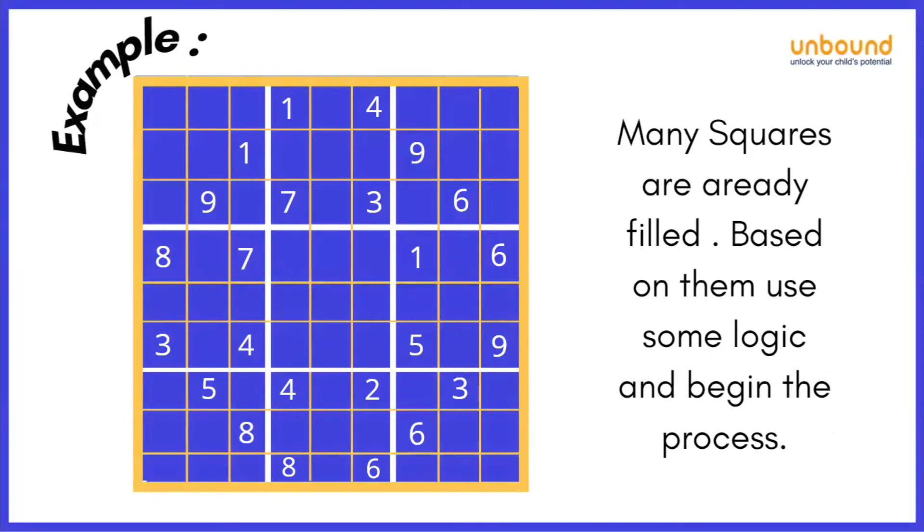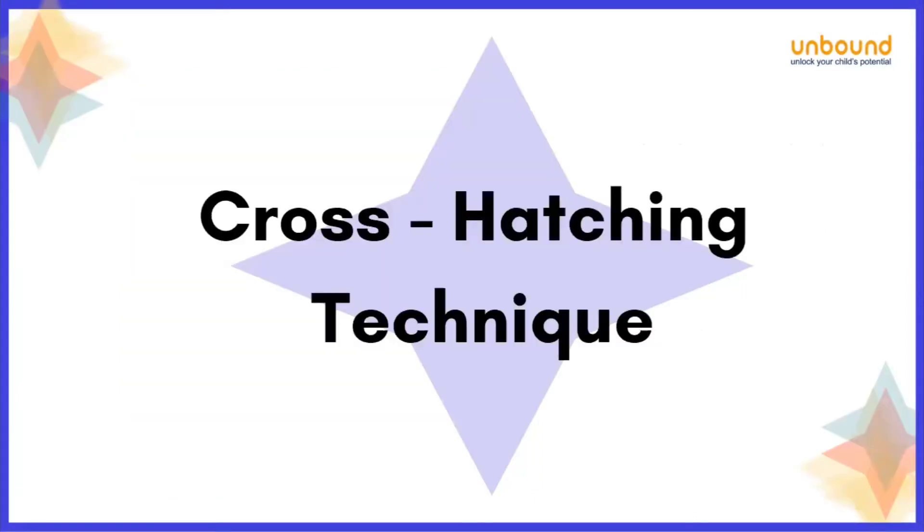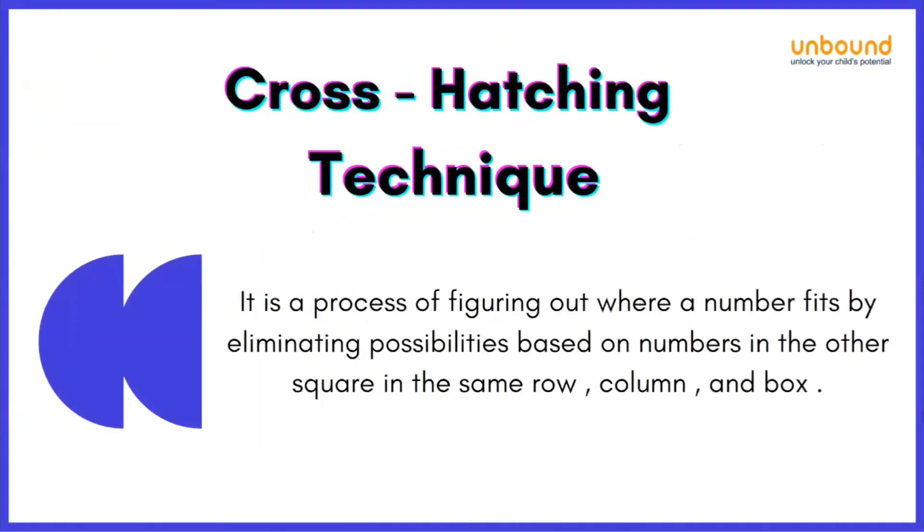According to people's convenience, they use different types of logic. And one of them is the cross-hatching technique. Basically, what happens in a cross-hatching technique? It is a process of figuring out where a number fits by eliminating possibilities based on numbers in the other squares in the same row, column, and box.